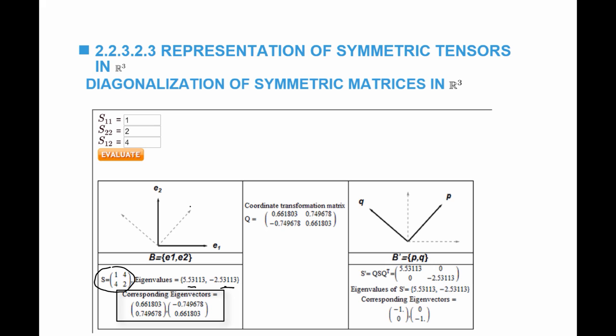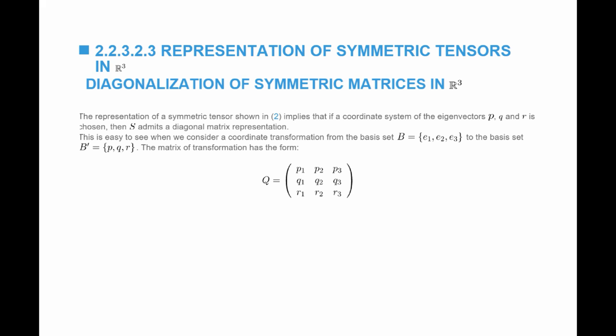For this particular example, the first eigenvector is p and the second is q, and they are perpendicular to each other. If I now choose a coordinate transformation so that my new coordinate system is actually the eigenvectors of S, then S prime — the components of S in that new coordinate system, equal to Q S Q^T — will in fact be a diagonal matrix. Not only that, the diagonal components are the eigenvalues of S, and in this new coordinate system the eigenvectors are simply p and q themselves.